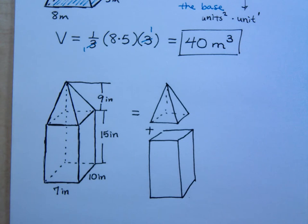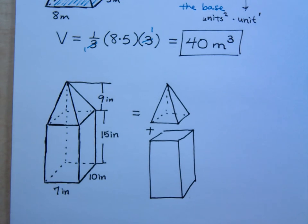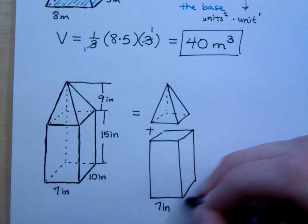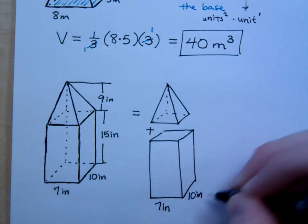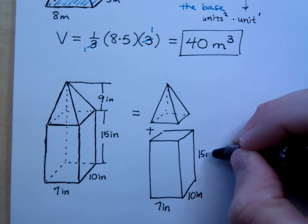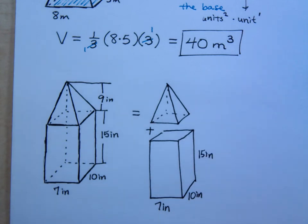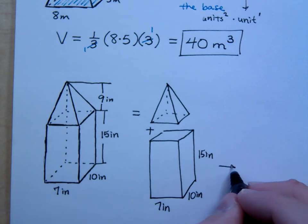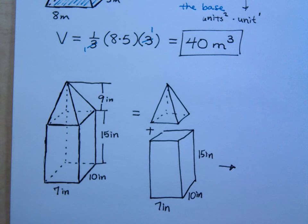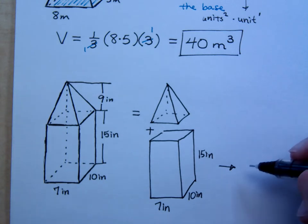One of these has a very easy to find volume. Which one is that? Who's the easy one to find? The rectangular solid. Because this guy is 7 inches by 10 inches by 15 inches. Okay. So, for this guy right here, what would you do? How would you find its volume? Length times width times height.